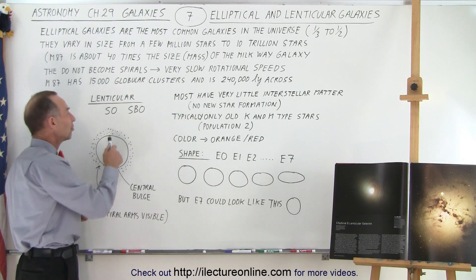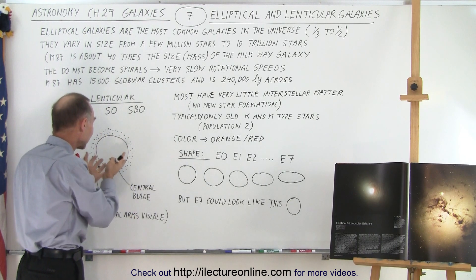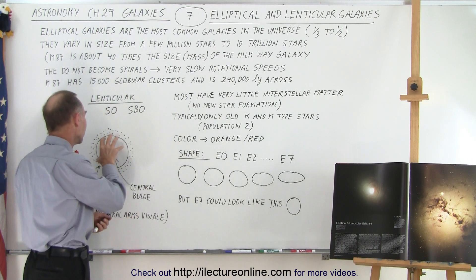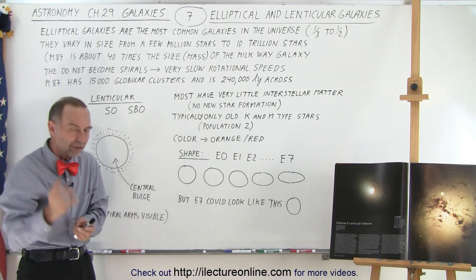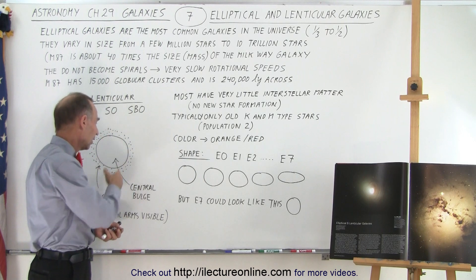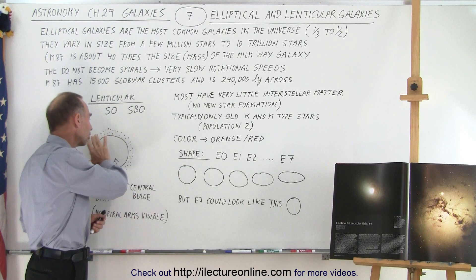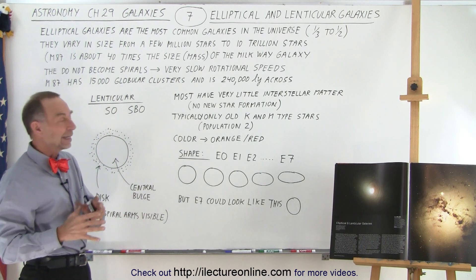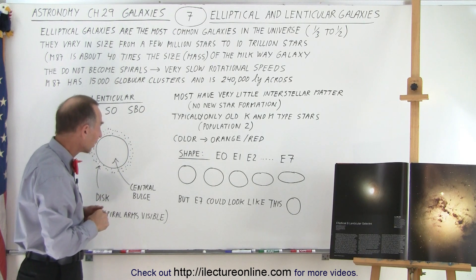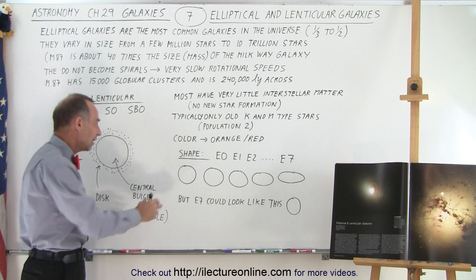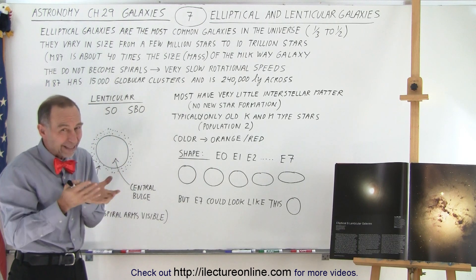Going to lenticular galaxies — we give them designations S0 or SB0. SB0 if the central region looks more like a bar; S0 if the central region looks more like a spherical shape. Lenticular galaxies have this central bulge, and then around it something that kind of looks like spiral arms but without any specific definition. You cannot tell if there are any arms there, but it looks like a disk that typically contains a little more gas and dust, with nebulas and potentially star formation — so it looks a little like the disk region of a spiral galaxy.